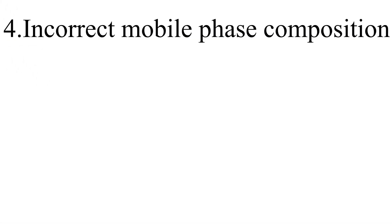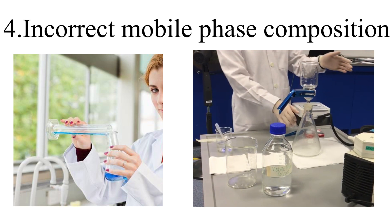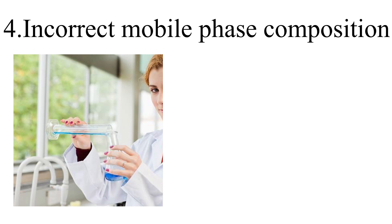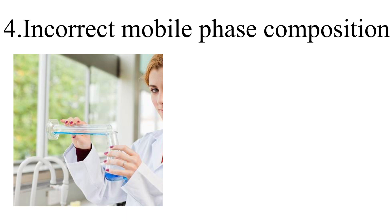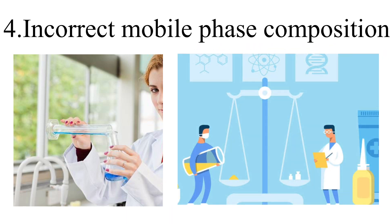Number 4: Incorrect mobile phase composition. The most likely source of variation in retention time is a change in the composition of the mobile phase. In reverse phase chromatography, an error of 1% in the amount of organic solvent will change the retention time of your analyte peak by between 5 to 15%. That's why we have to measure mobile phase solvents accurately. The best approach to prepare a mobile phase is gravimetrically rather than volumetrically.